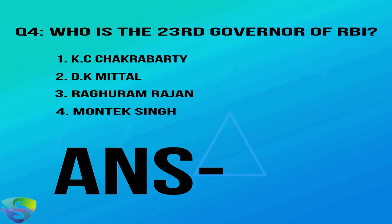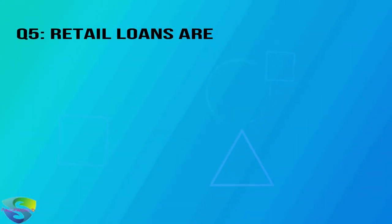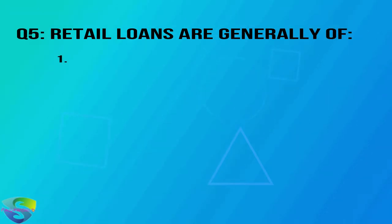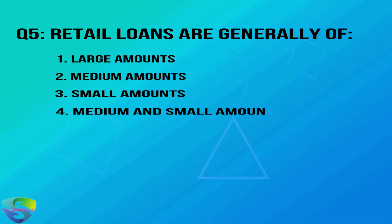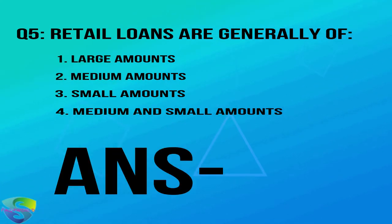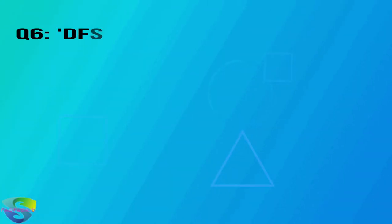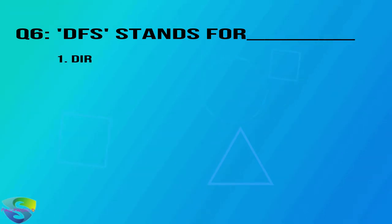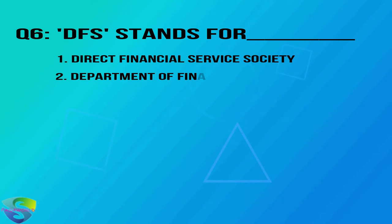Answer to question four is option 3: Raghuram Rajan. Question five: retail loans are generally of — large amounts, medium amounts, small amounts, or medium and small amounts? Answer is option 4: medium and small amounts. Question six: DFS stands for — direct financial service society, department of financial service, distressed farmers service, or none of the above?